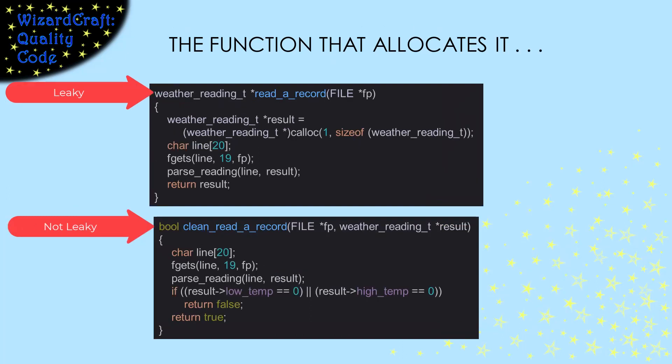For completeness, we should look at how this changed read_a_record. Basically, instead of allocating the space and returning that pointer, it has an input-output parameter that is where the data that it is reading should go.